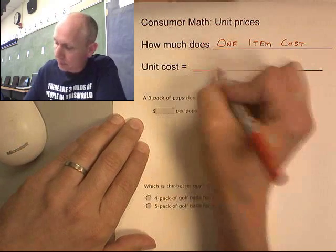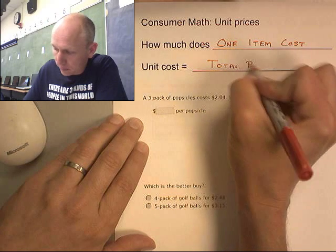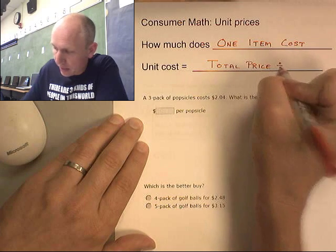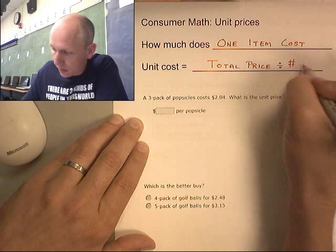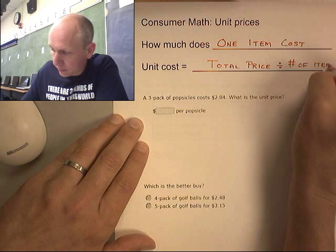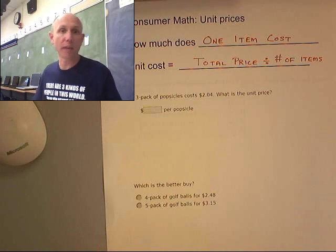total price divided by number of items. There we go. So unit cost equals the total price divided by the number of items.